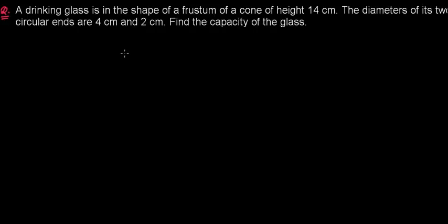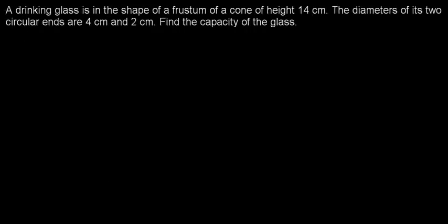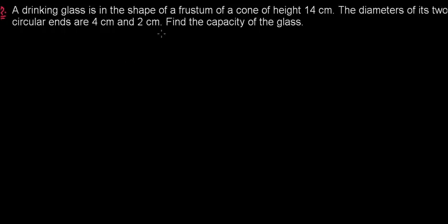Here we have the first exercise question of the frustum of a cone. A drinking glass in the shape of a frustum of a cone has a height of 14 cm, and the diameters of the two circular ends are 4 cm and 2 cm. Find the capacity of the glass.